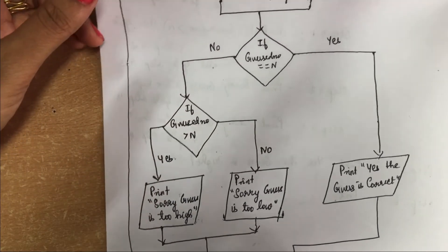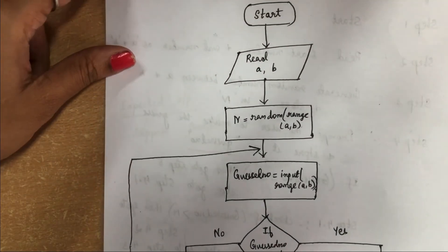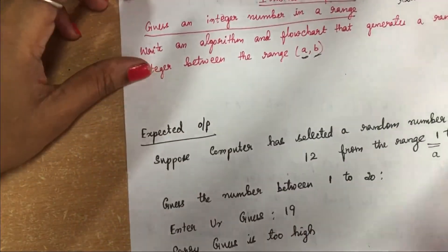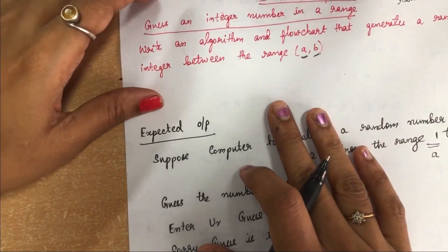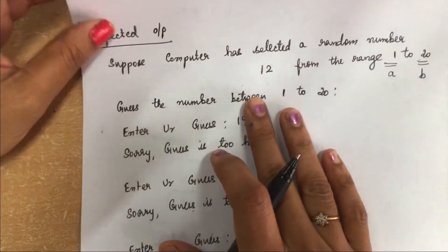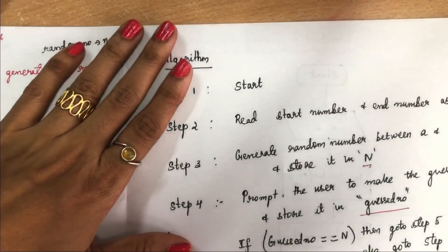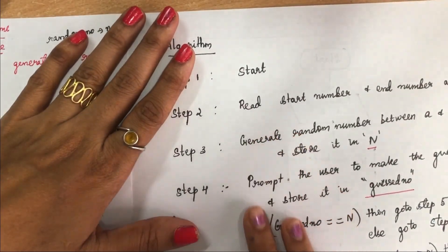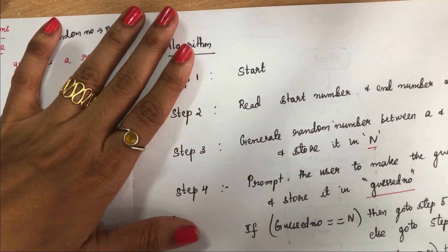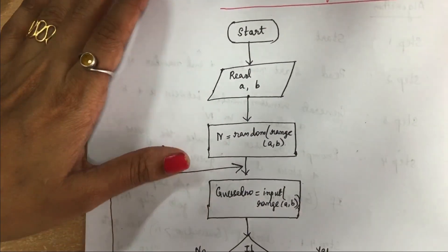I think you all have understood guessing a number. I have explained the expected output, the algorithm for solving this problem, and the flowchart. Thank you.